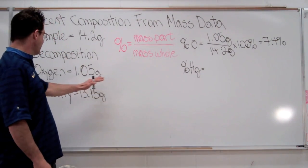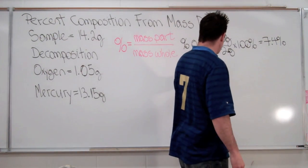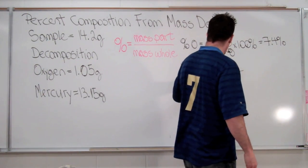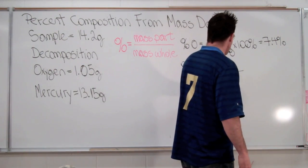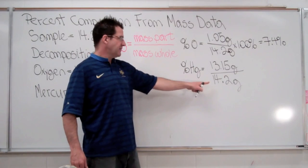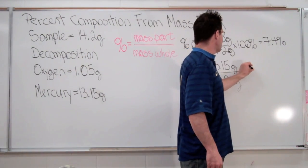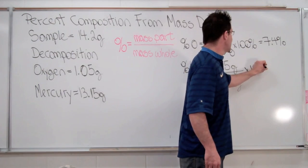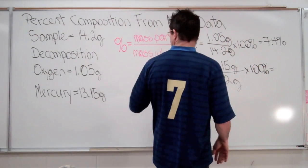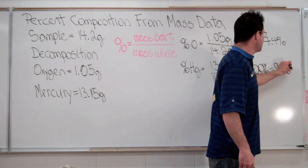We do the same thing for the mercury. We have 13.15 grams of mercury divided by the mass of the total sample. Once again, of course, we're going to multiply that times 100 and we come up with the mass of our sample in this case is 92.6 percent.